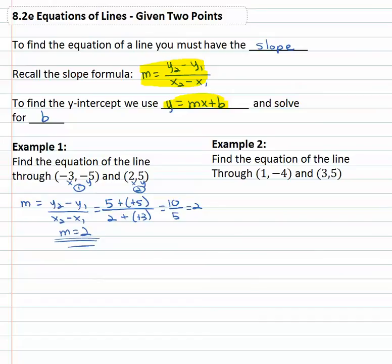Now we have the slope; we need to find the y-intercept. To find the y-intercept we use the equation y equals mx plus b, and plug in whatever we can to help us find b. We've got a couple of points to choose from. It doesn't really matter which point we use — we'll get the same value for b as long as we don't switch halfway through. So let's use the first point, negative three, negative five, and the slope of two.